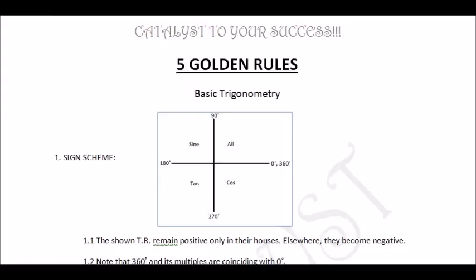To remember which ratios are positive in each quadrant, we use the rule: Add Sugar To Coffee. Here, A stands for All, S stands for Sine, T stands for Tan, and C stands for Cos.